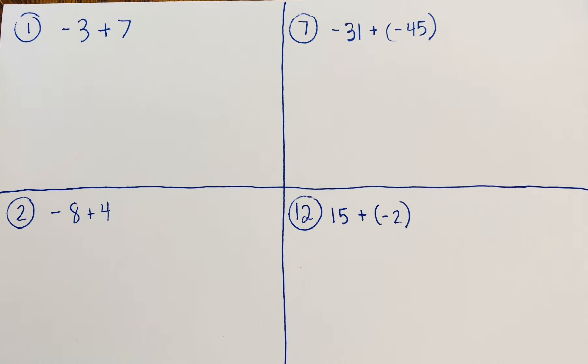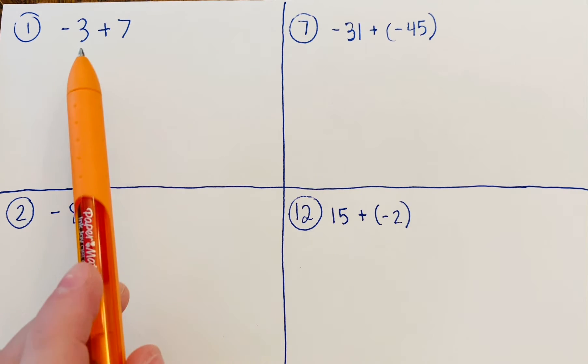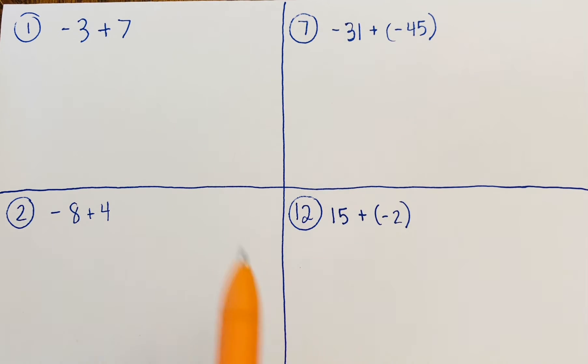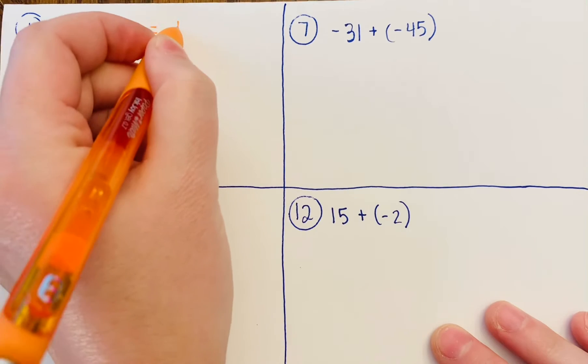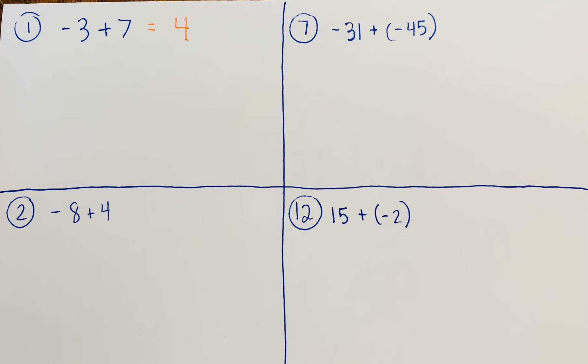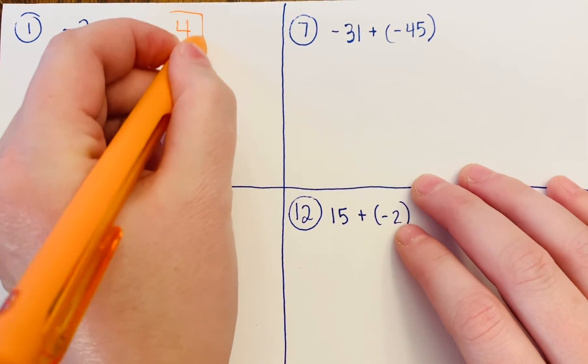The first one is -3 + 7. You need to know if you have same signs or different signs. We've got a positive and a negative, so different signs. Find the difference—difference means subtract—so 7 - 3 = 4. Then ask yourself: do you have more positives or negatives? Seven is bigger than three, so we have more positives. The answer is positive 4.